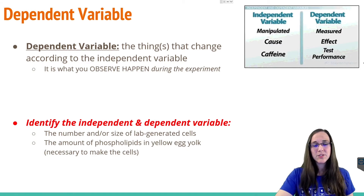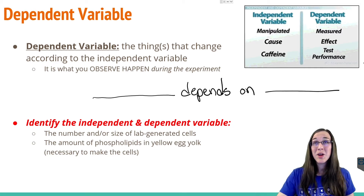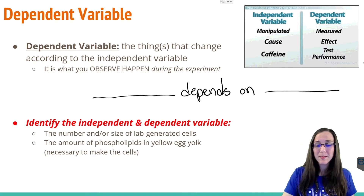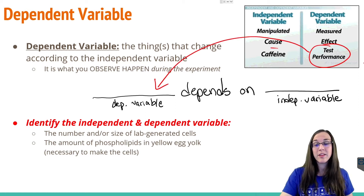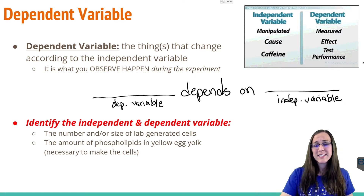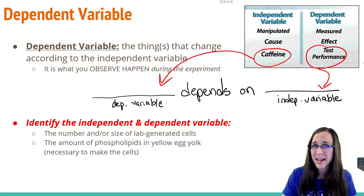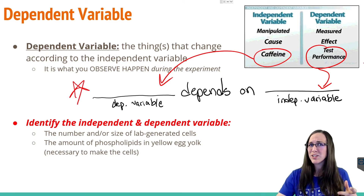I like to think of this in a Mad Libs scenario: 'Blank depends on blank.' Whatever fits in the first blank is our dependent variable, and the second blank is the independent variable. Following the previous example: test performance depends on the number of cups of caffeine the participants drink. If you flip it — caffeine depends on test performance — that makes zero sense. So always plug your variables into that 'blank depends on blank' format to test your logic.